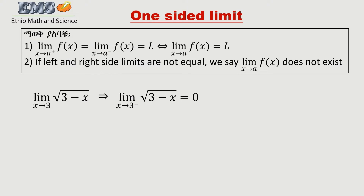Find the limit of the square root of 3 minus x as x goes to 3 from the left side. This is how you approach from the same line — approaching from the left side.